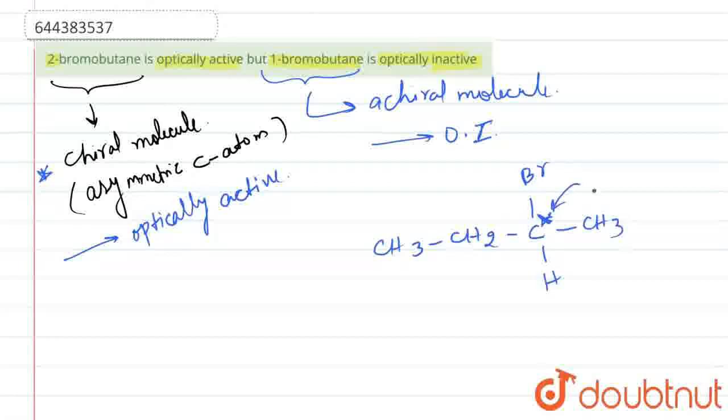So this carbon is chiral, as four different groups are attached to it. This is the reason we can say 2-bromobutane is optically active, but 1-bromobutane is optically inactive. This is our required answer. Thank you.